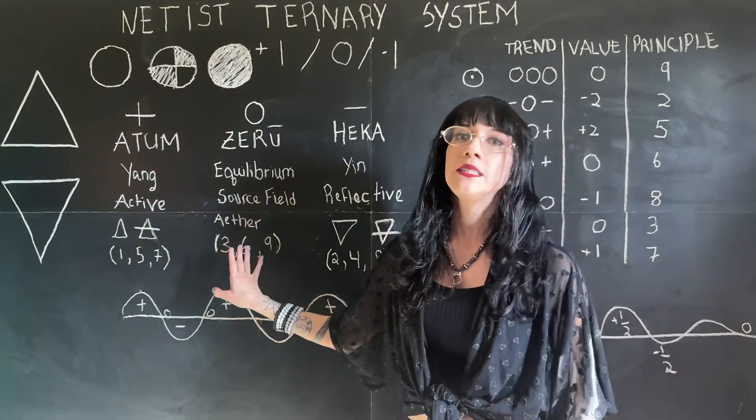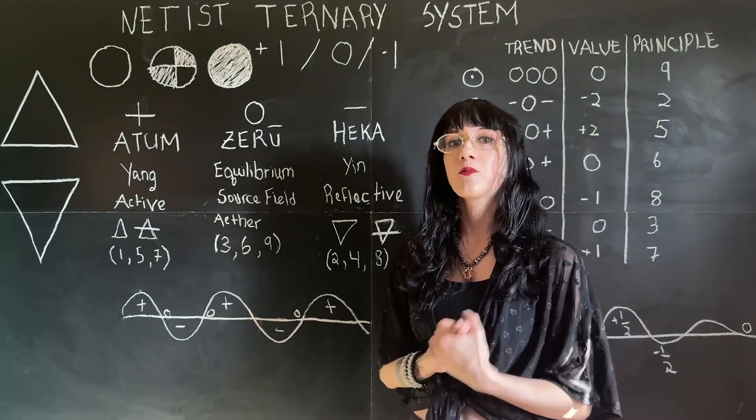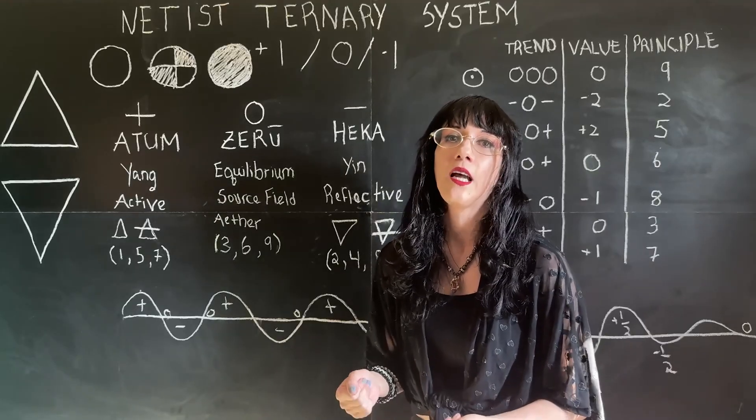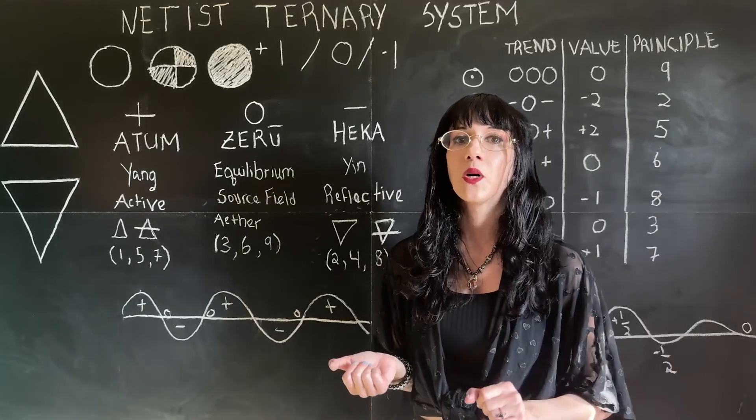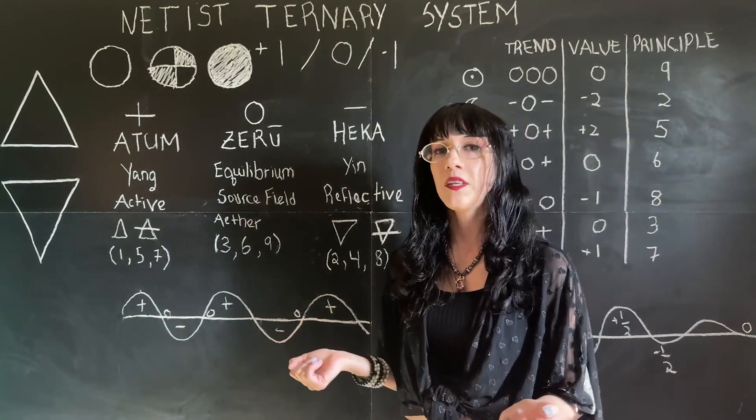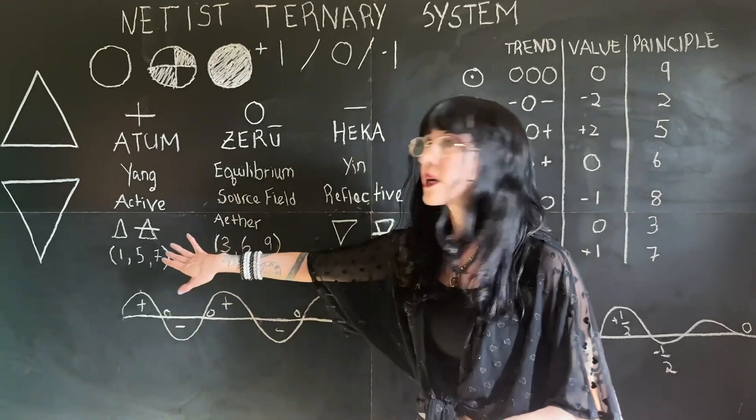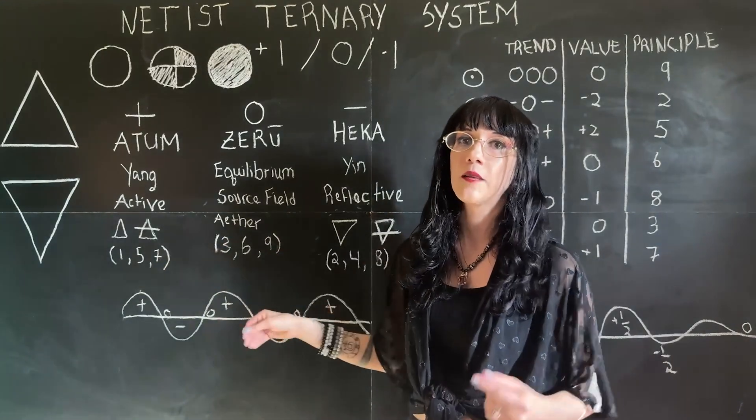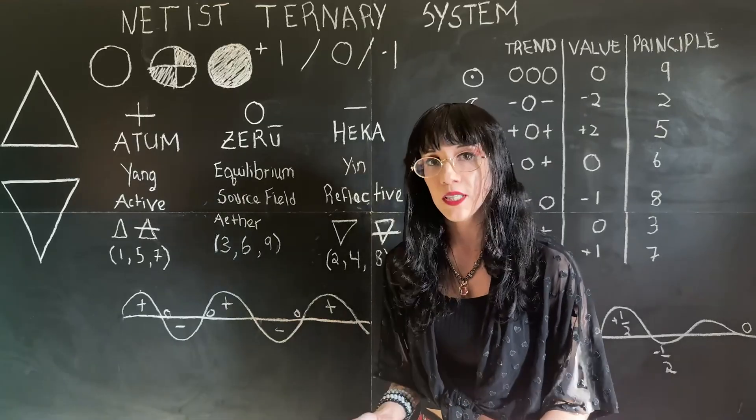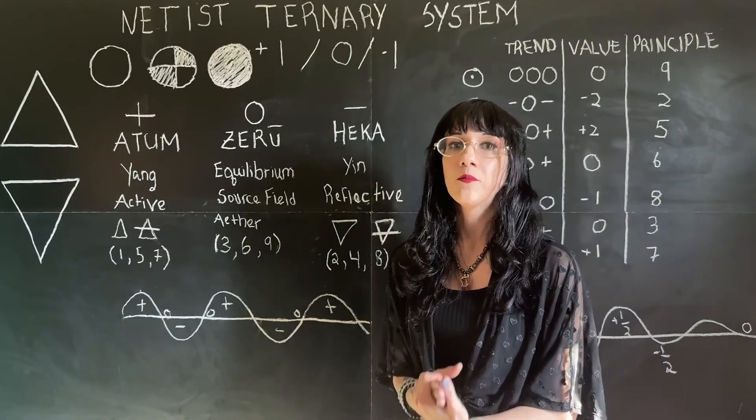So zero is undifferentiated. It is all elements together in their primordial state. So nothing's expressed. Everything is potential. Zero is everything before it hits that moment of threshold, before it goes through that atomic leap. It is all elements. It's the void, but the void is full. It's eternally primordial.